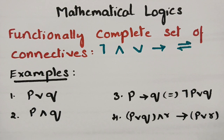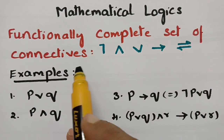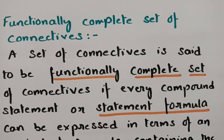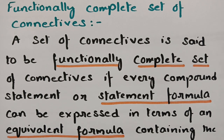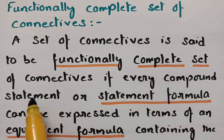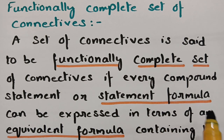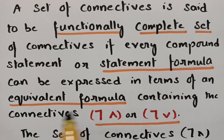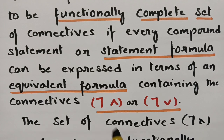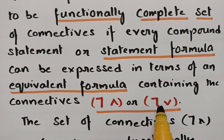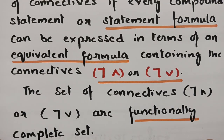What is a functionally complete set of connectives? There are certain sets of connectives which are said to be functionally complete if every compound statement or statement formula can be expressed in terms of an equivalent formula containing the connectives negation and conjunction, or negation and disjunction. Both these sets are called functionally complete sets.